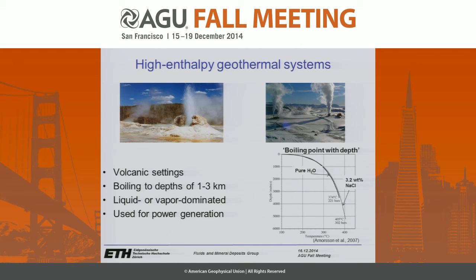These systems are typically boiling to depths of one to three kilometers, and they follow the boiling point with depth curve, as you can see on the right. At temperatures above 374 degrees, you no longer have liquid and vapor boiling, but instead a single-phase supercritical fluid.